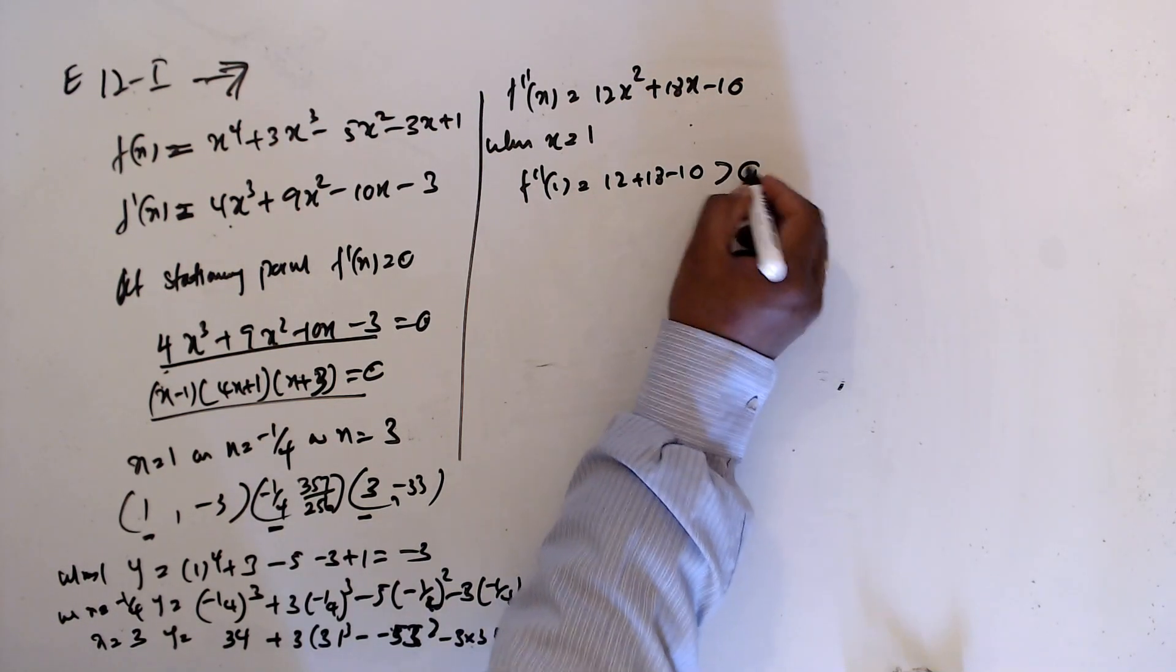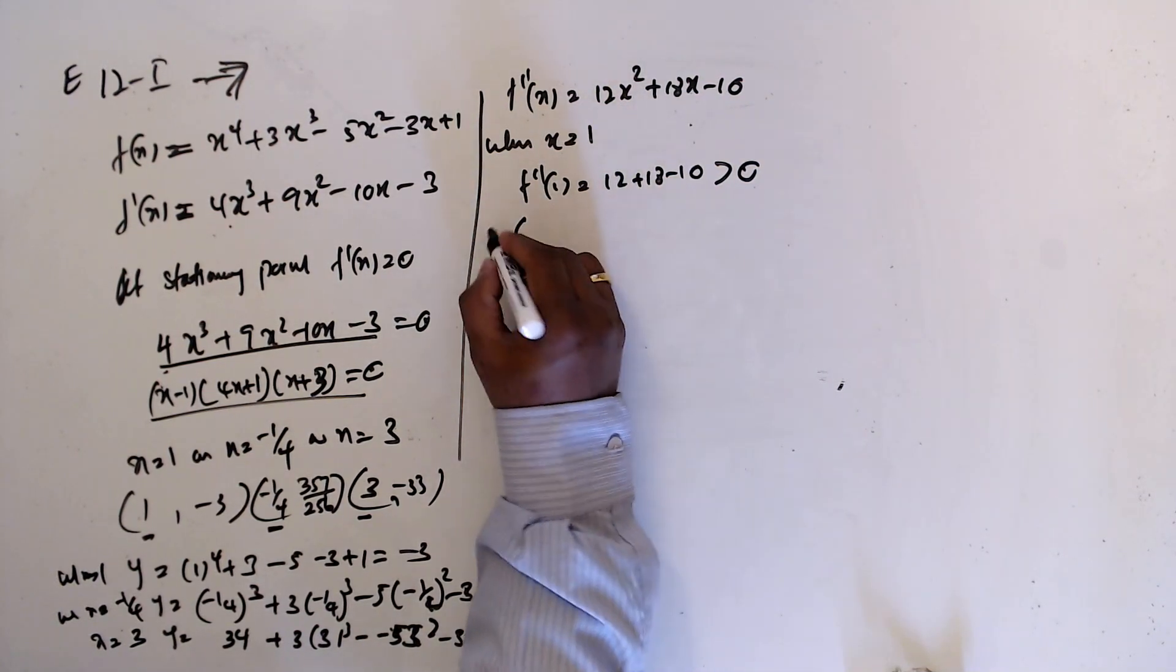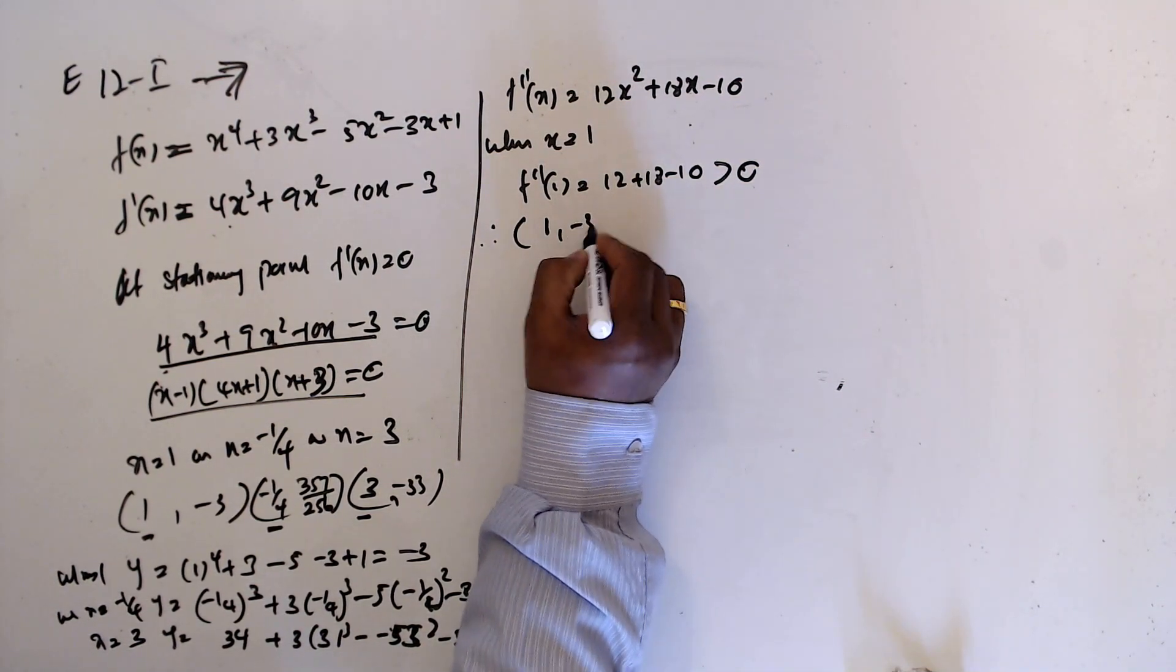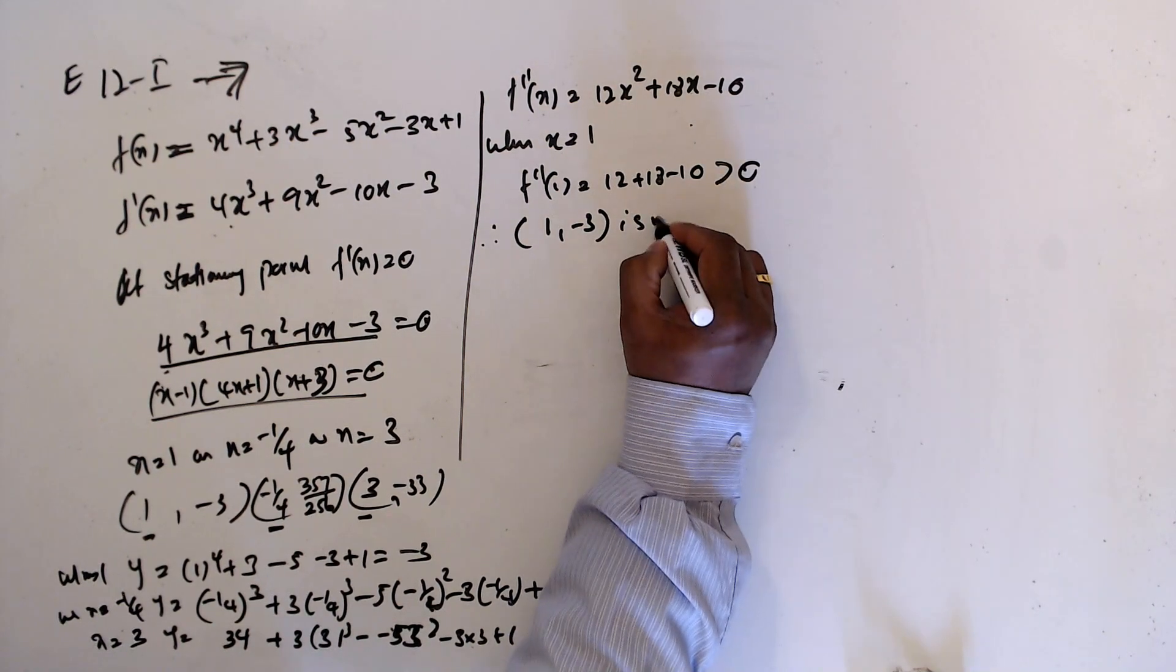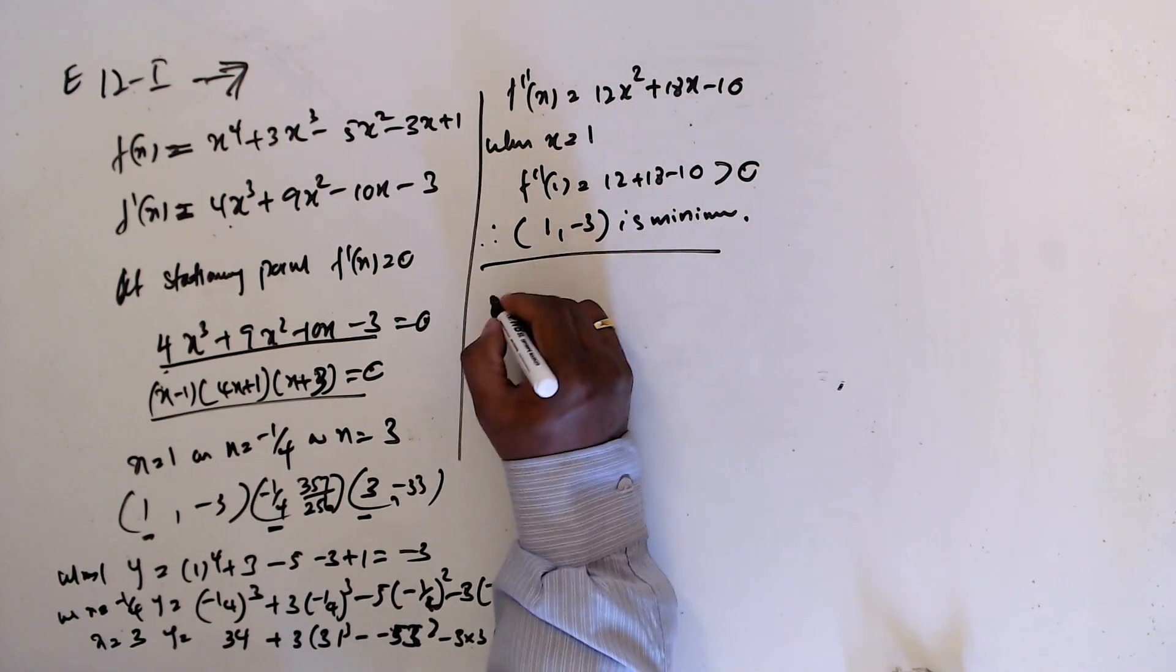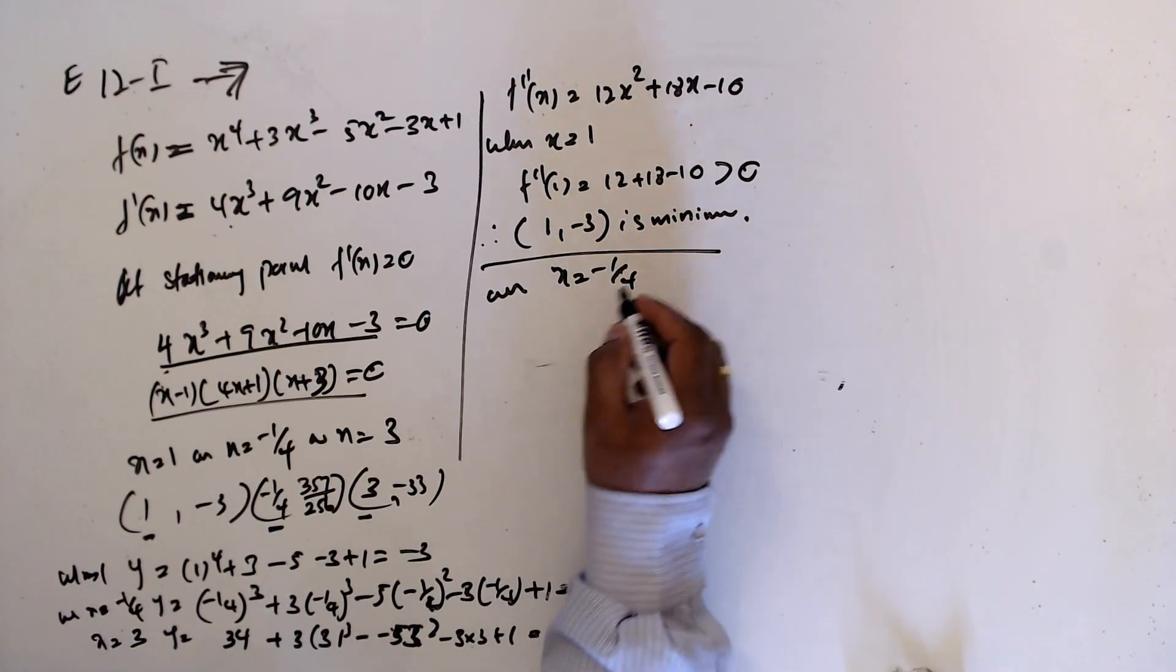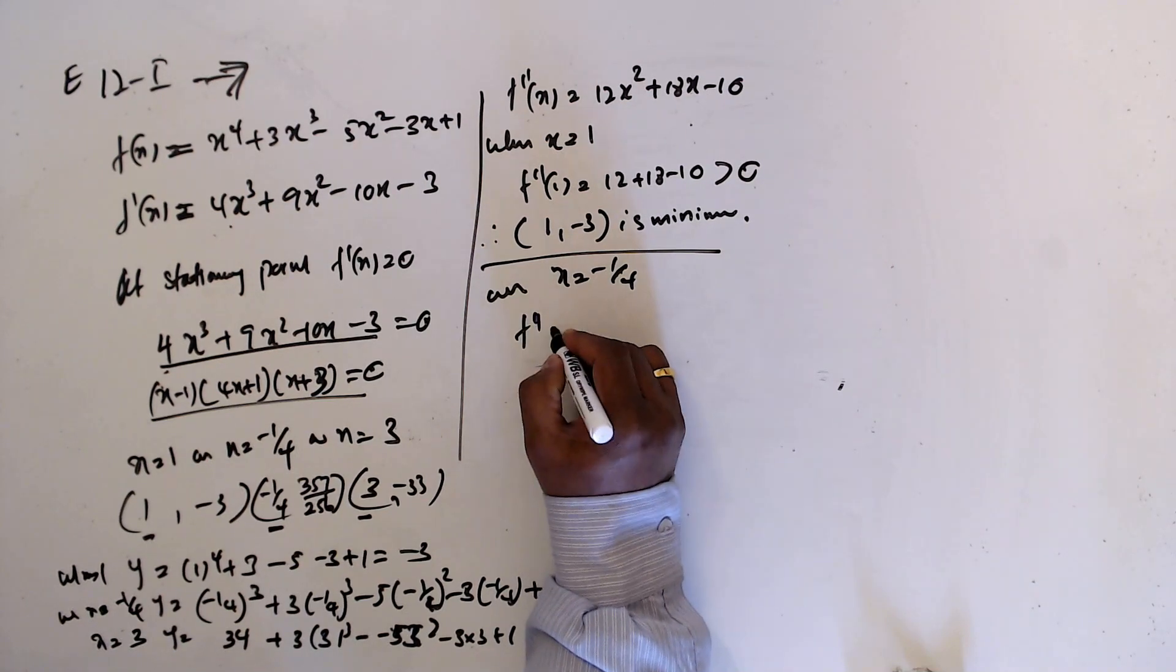Greater than 0, hence (1, -3) is the minimum. When x equal minus 1/4, f double prime...